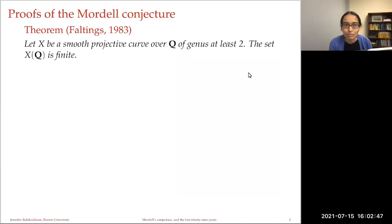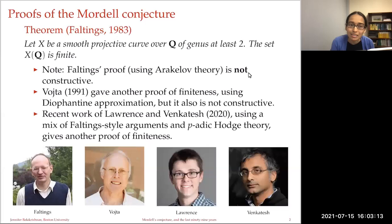Here is the statement of Faltings' theorem: if I have a smooth projective curve over the rationals of genus at least 2, then the set of rational points is finite. Just one remark — this is a wonderful theorem, a very impressive result about understanding rational points on curves. But the proof itself doesn't give us the set of rational points. It's not constructive.